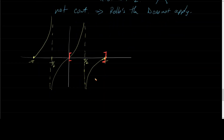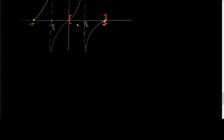Because Rolle's Theorem does not apply, it is not guaranteed that there's a value between 0 and pi such that F prime equals zero — no guaranteed relative minimum or maximum. And in fact, looking at the graph of tangent on that interval, there clearly is none. So Rolle's Theorem does not apply here.